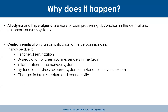Why does it happen? It seems to be a pain processing dysfunction in both the central and peripheral nervous systems. We refer to something called central sensitization — an amplification of nerve pain signaling. It can be due to peripheral nerve damage, but also a dysregulation of brain chemicals. Neurotransmitters like substance P and glutamate may be increased, causing problems with how the brain processes experiences. Inflammation, abnormal stress responses, and autonomic nervous system dysfunction can also be causes.